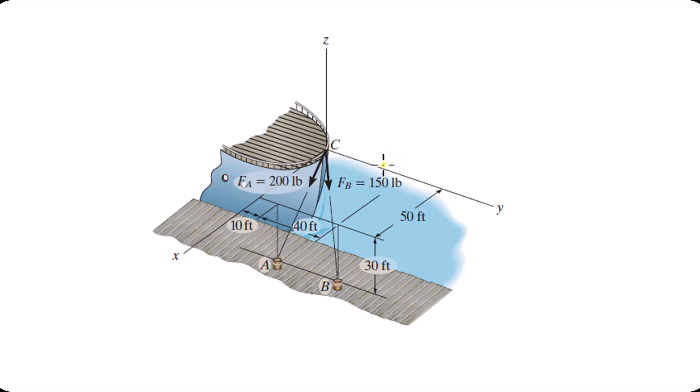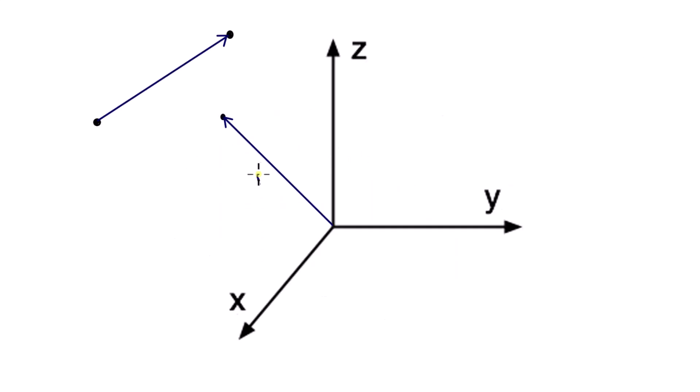So position vectors, we talked about position vectors earlier in the video. How exactly do you get a position vector? These are two position vectors. Remember, a position vector is a fixed vector which locates a point in space relative to another point. R1 is locating this point relative to the origin. R2 is locating two points away from the origin relative to each other.